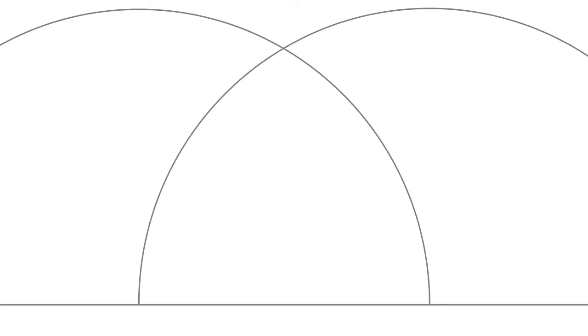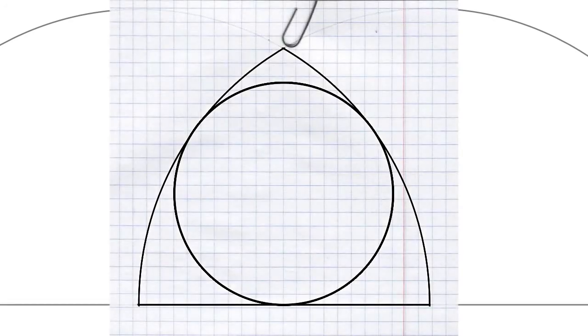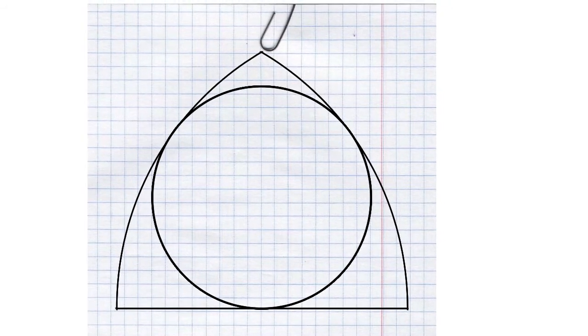When we did the Gothic Windows project, they first had to use a compass and paper and they constructed a tented arch with a circle inscribed. That proved to me they got the concept. That maybe took like a day.